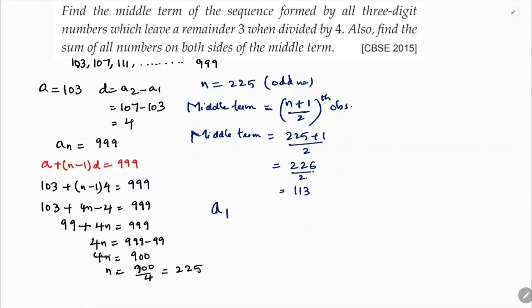We need to find a₁₁₃ = a + 112d. The 113th term is the middle term. Substituting a = 103 and d = 4: 103 + 112×4 = 103 + 448 = 551. So 551 is the middle term.